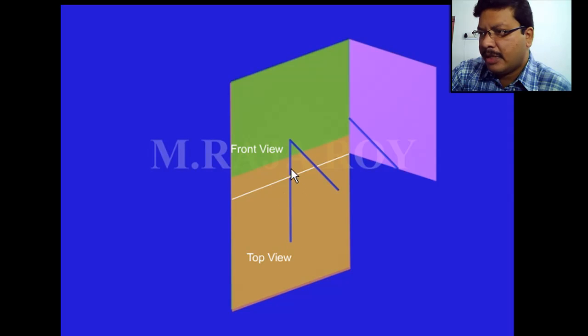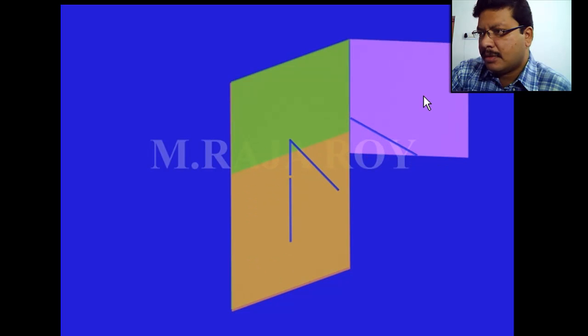And the projector is on the same line means here apparent angle alpha and beta are 90. And now I am projecting the side view onto the plane by rotating this or by opening this profile plane, something like this.